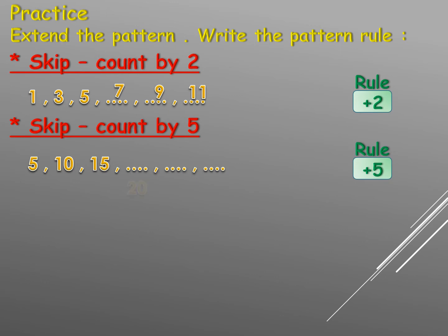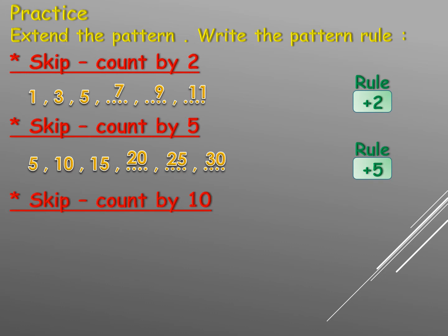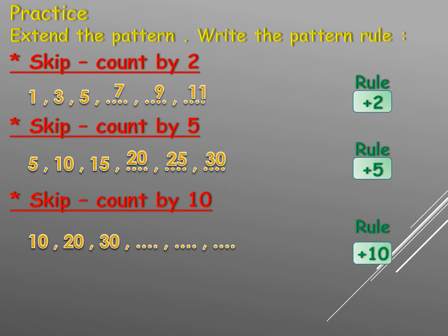Let's complete the pattern: five, ten, fifteen, twenty, twenty-five, thirty, and so on. Skip counting by ten: ten, twenty, thirty — what comes next? Yes, forty! Our rule is plus ten because the numbers are in ascending order and the difference is ten. So: twenty, thirty, forty, fifty, sixty.